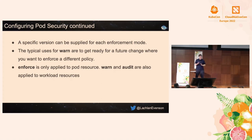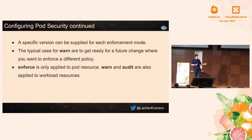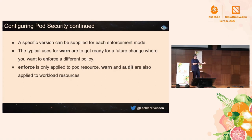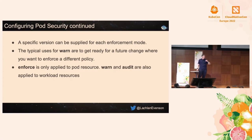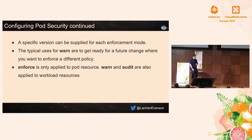You usually start with warn to give users feedback, then move to enforce. You can warn on one level and enforce on another — for example, enforce on privileged but warn on baseline. This helps workloads currently deployed move up: users get a warning message, their workloads are still deployed, but they're told to fix the violation. Then you can move from privileged up to baseline, and subsequently up to restricted.